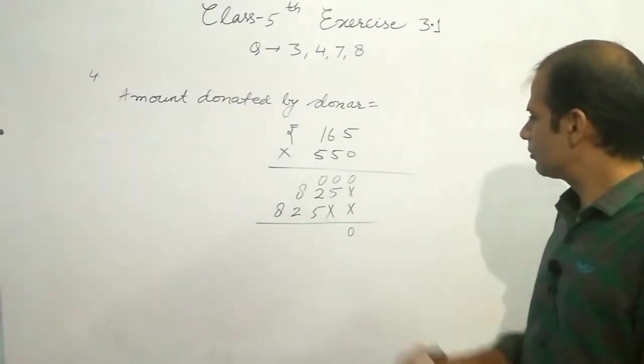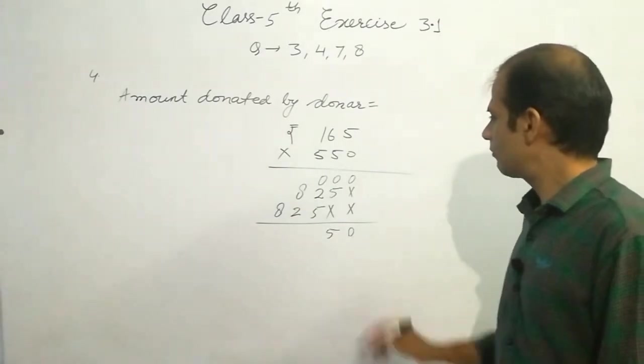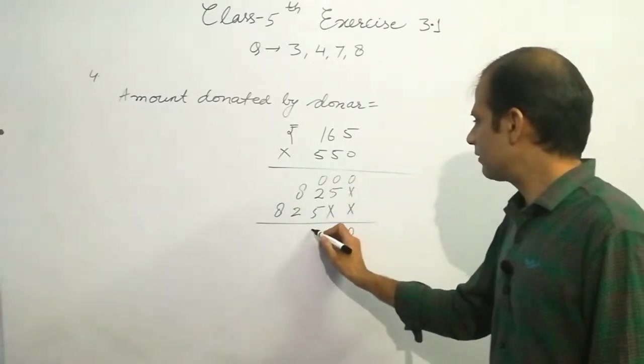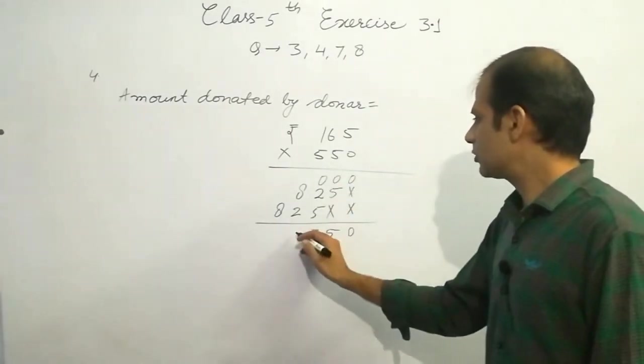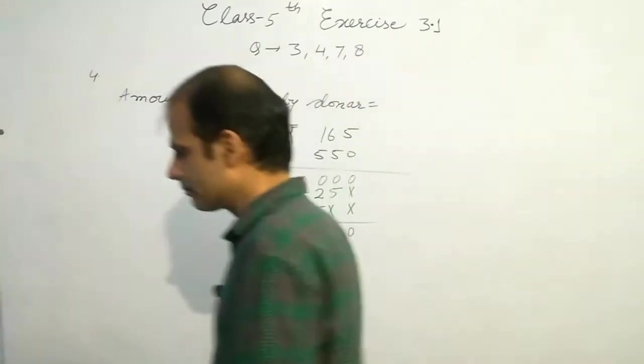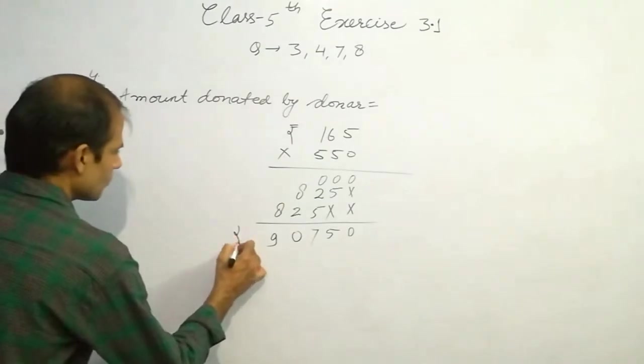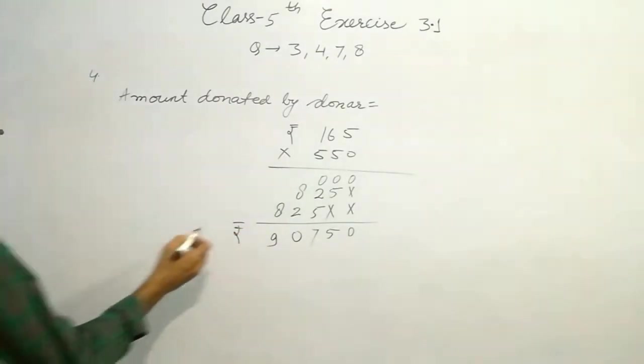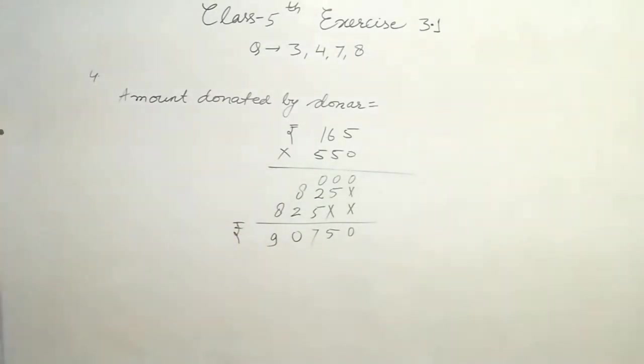Now perform the addition. It is 0, it is 5, 2 plus 5, 7. 8 plus 2, 10, 1 carry and 8 plus 1, 9. So the total amount donated by the donor is rupees 90,750. So the answer of fourth question, 90,750. Pause the video and note it down.